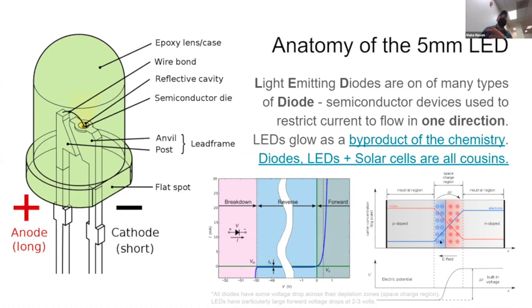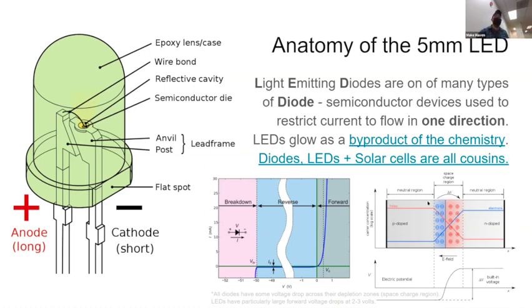There's some really cool quantum dynamics in how this works, so if you want to go deep in the science you sure can with an LED. An interesting quirk to know is that LEDs, diodes, and solar panels are all in the same family. A solar panel is kind of like an LED in reverse — light goes in and electricity comes out — whereas an LED has electricity going in and light coming out.